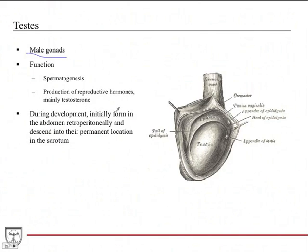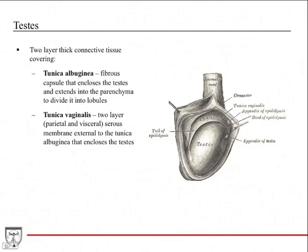During development, the testicles initially form in the abdomen, retroperitoneally — which is a key spatial relationship to know — and then they descend into their permanent location within the scrotum. They have two thick connective tissue coverings. The first is the tunica albuginea, which is a fibrous capsule that encloses the testes. It extends into the parenchyma of the testes and divides it into lobules, or functional units. We'll talk about the microanatomy of the testes in a moment.